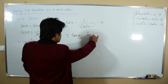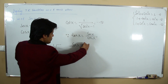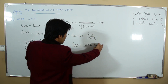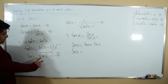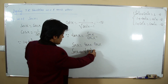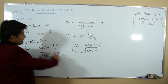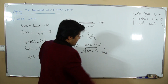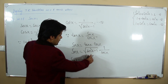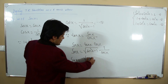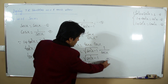From tan x = sin x / cos x, by cross-multiplication: sin x = tan x · cos x. Substituting tan x = √(sec²x - 1) and cos x = 1/sec x: sin x = √(sec²x - 1) / sec x. This is our fifth relation.